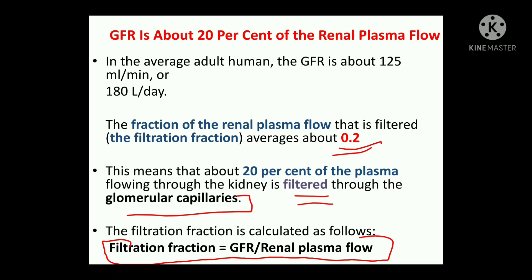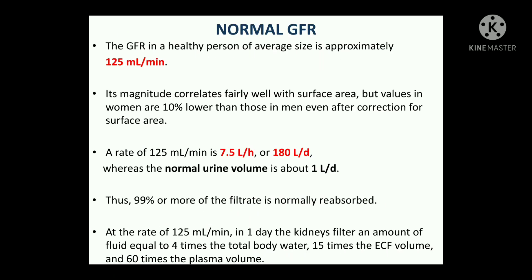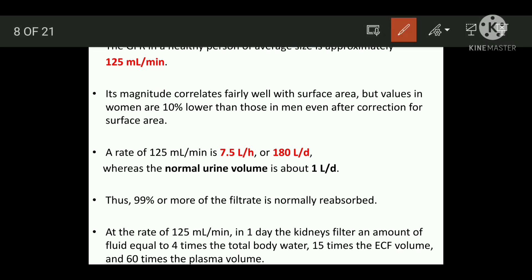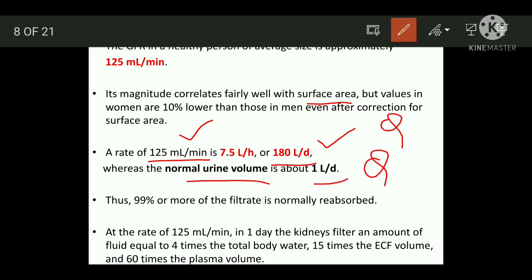Now for GFR in a healthy person — these are all normal values to remember. If the surface area is larger, GFR will be more; if it is smaller, GFR will be less. GFR is around 125 milliliters per minute or 180 liters per day, whereas the normal urine volume is around 1 liter per day. Remember these values — they can be asked in MCQs.